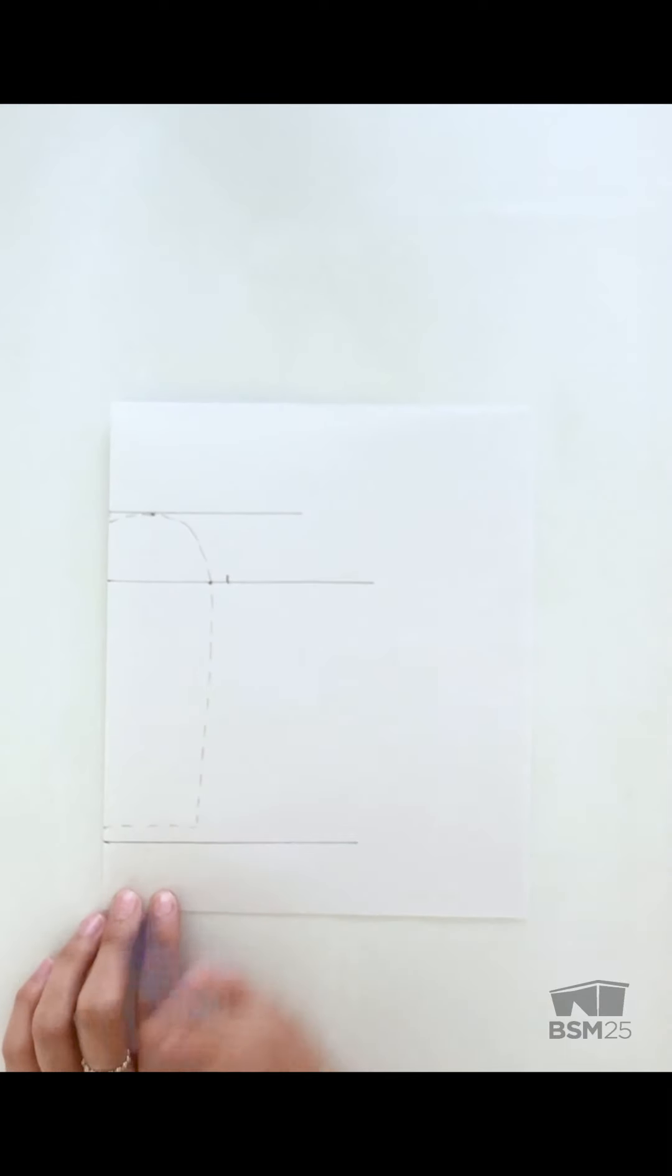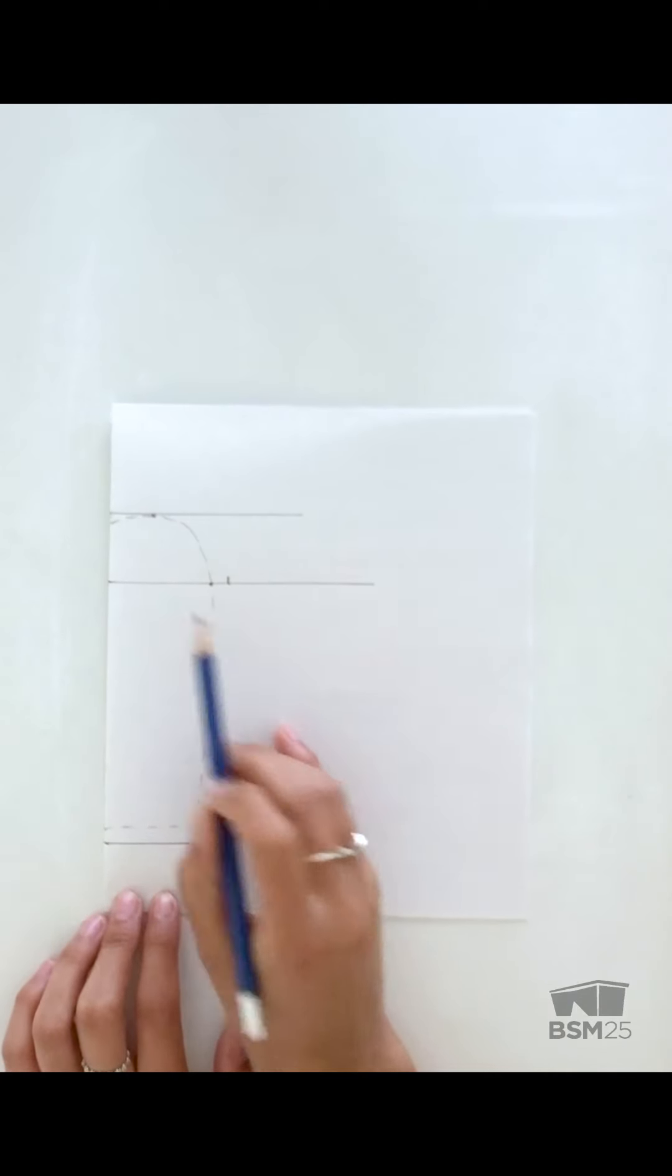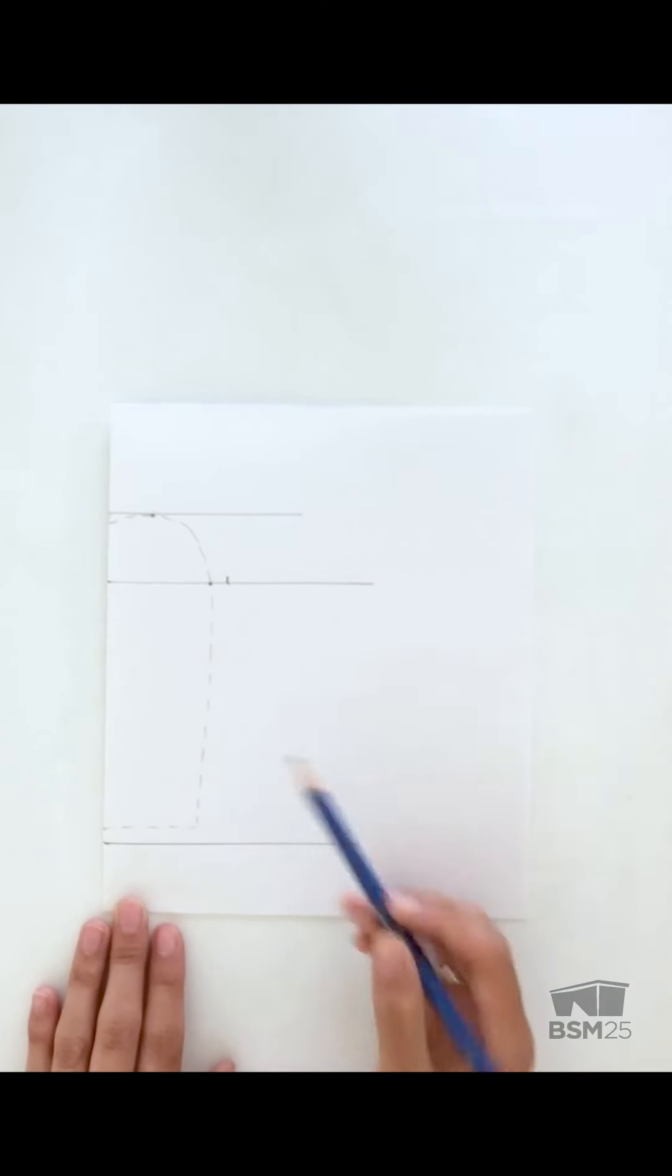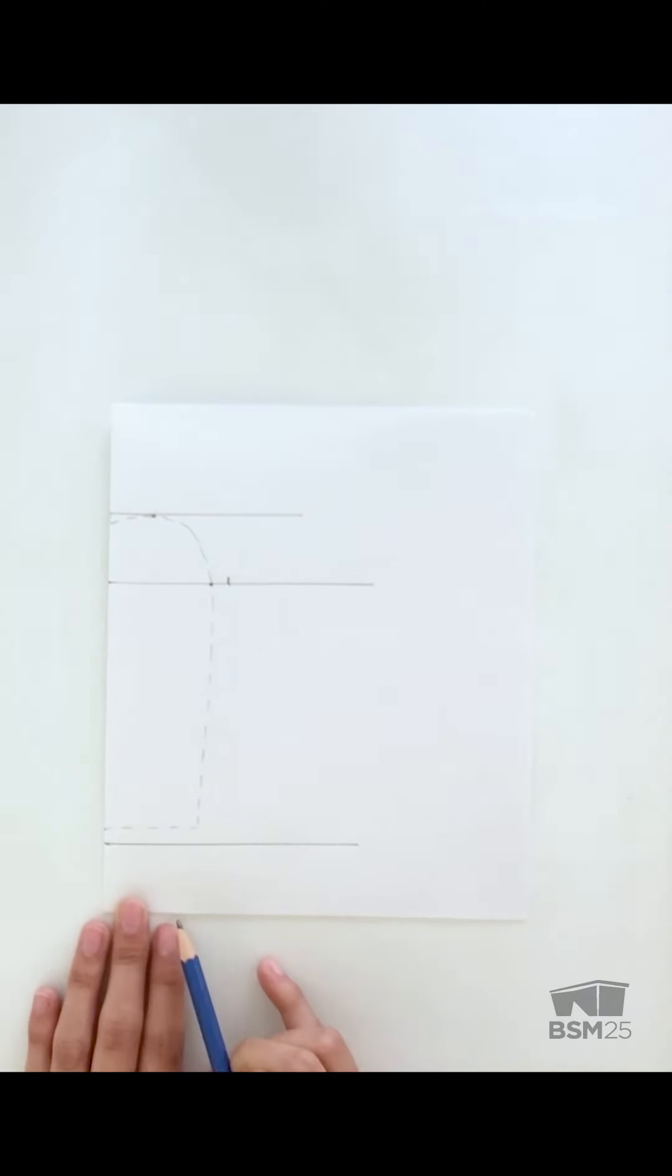Our second guideline is at the widest part. Draw in your horizontal guideline and mark a quarter inch tick mark from the dashed line. Our third guideline is at the bottom. Measure a quarter inch down from the dashed line and mark your horizontal guideline a couple inches.